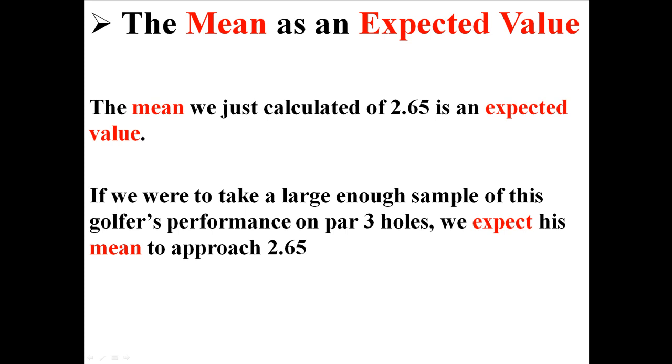Like, if we record him doing thousands and thousands of par-3 holes, the more and more he does, the closer and closer we expect it to get to 2.65. What this is actually called is the law of large numbers.